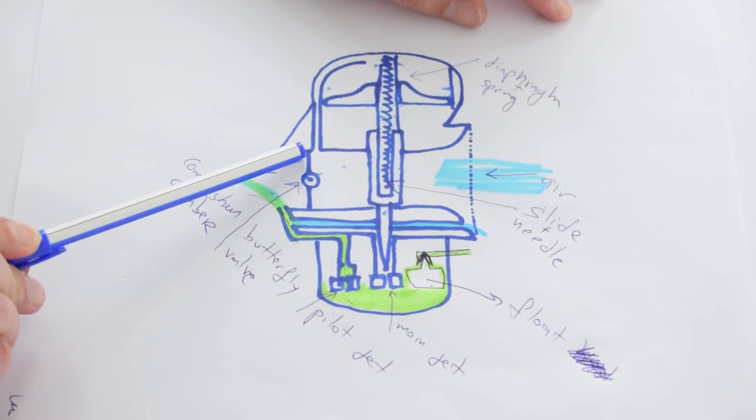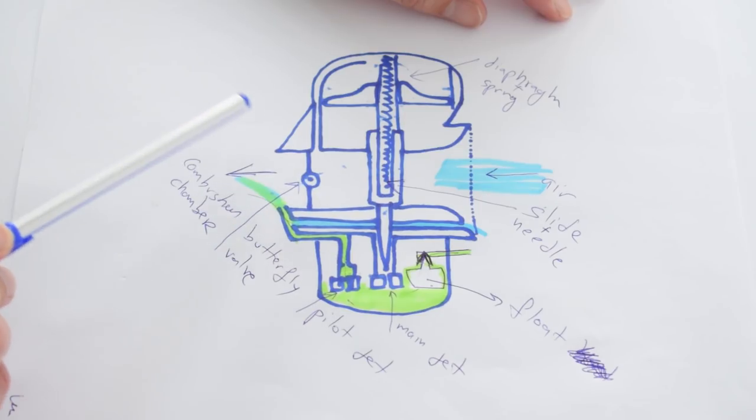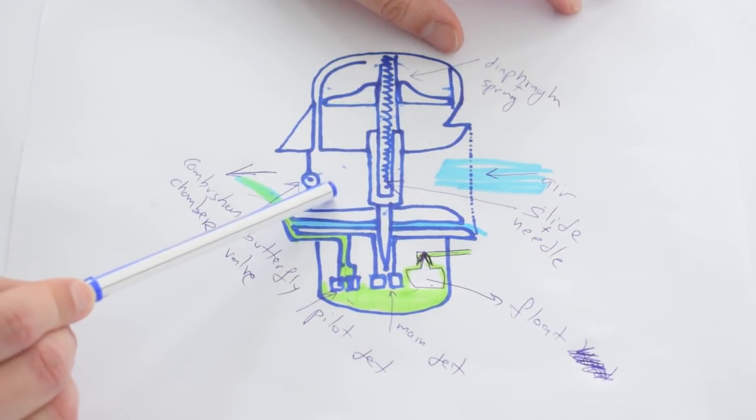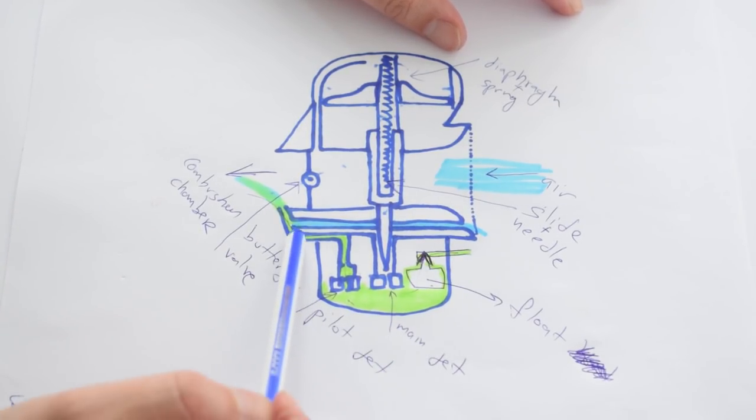Here we have our butterfly valve which is connected to our throttle, and when we open up the throttle this valve will be opened. This entire chamber here where the fuel sits is called the float bowl. Inside it we have the float.